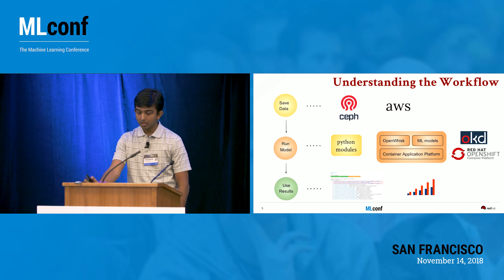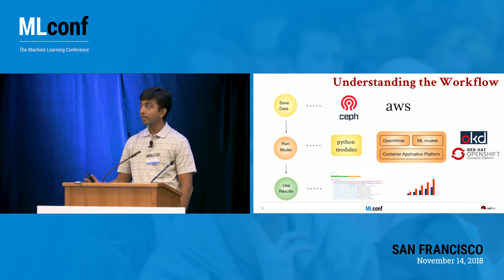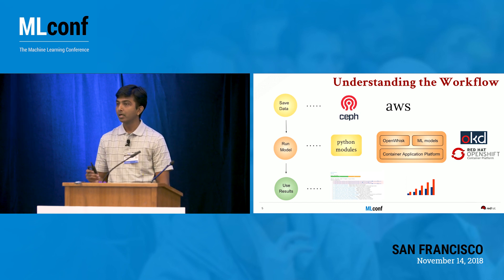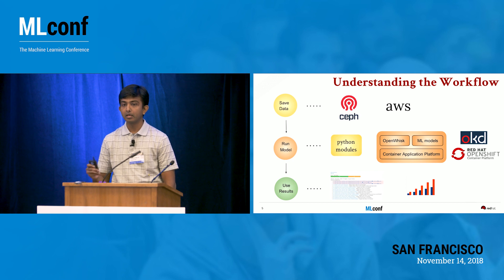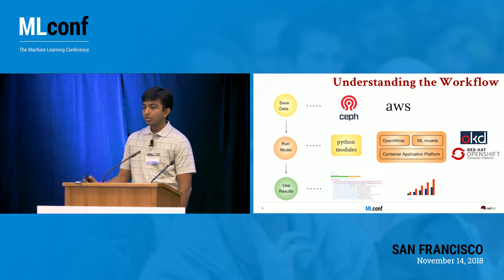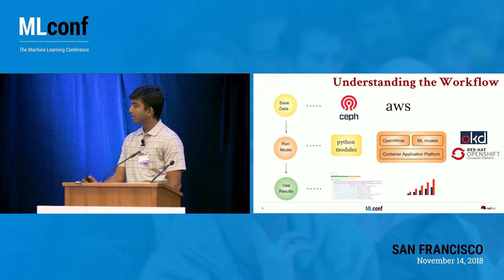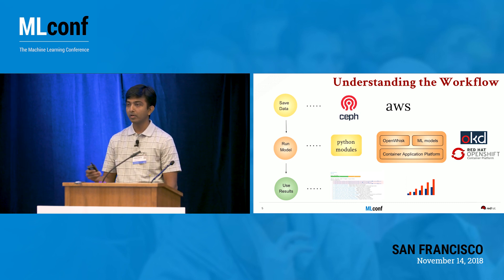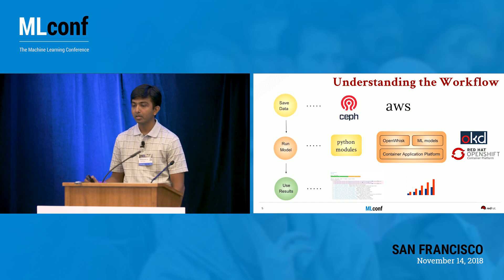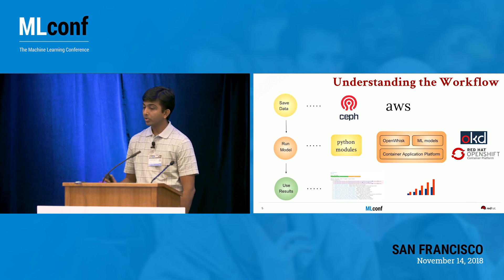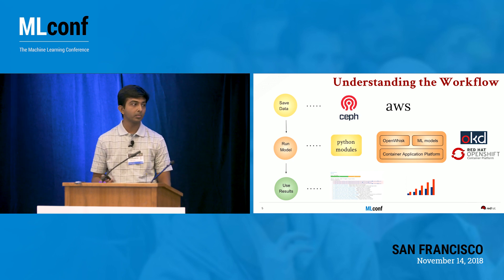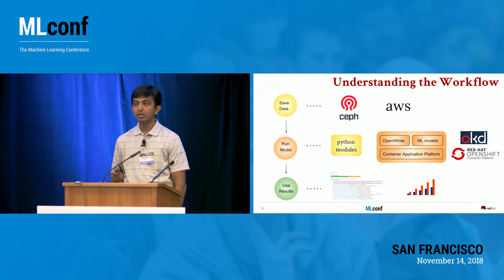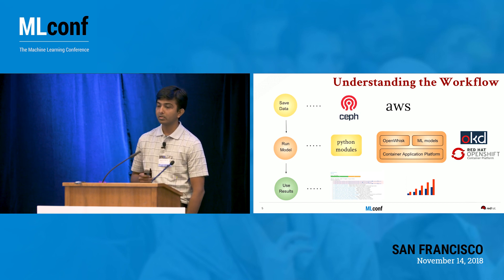The AI Library also comes with supporting libraries that let you handle infrastructure and data-related issues. Here's a simple three-step process of any machine learning experimentation: you save the data, you run the model, and you get the results. Running the model includes training and prediction.